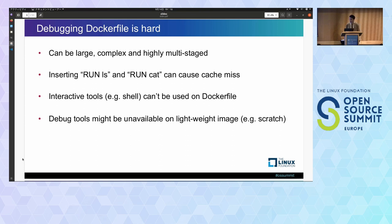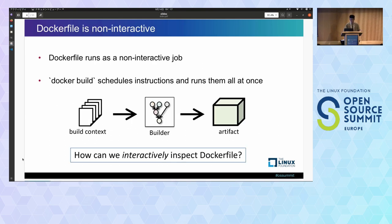Interactive tools, even shell, cannot be used on Dockerfile. Debugging tools might be unavailable on lightweight images like BusyBox or Scratch. These issues sometimes make debugging a 5-minute problem take hours. One of the root causes of these difficulties is the lack of interactive operation. Dockerfile is typically executed as a non-interactive and atomic job. Tools like Docker build parse the Dockerfile and schedule all instructions, then execute them all at once without providing interactive operations for inspecting the Dockerfile.